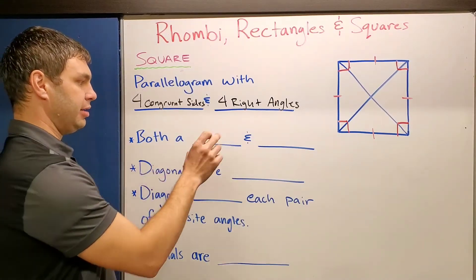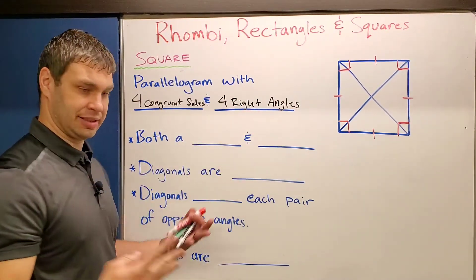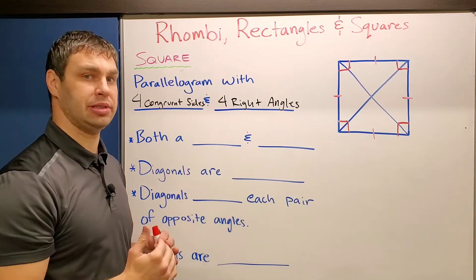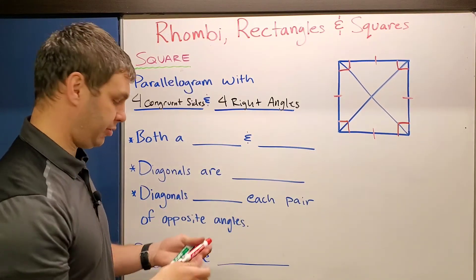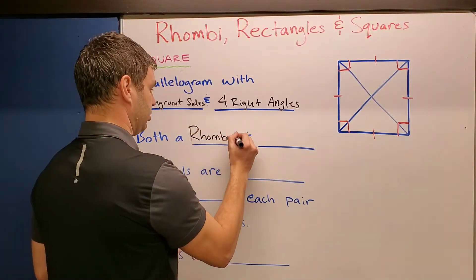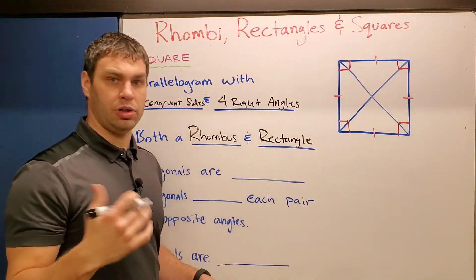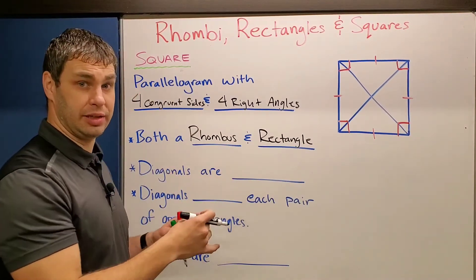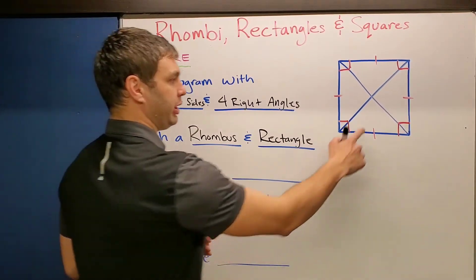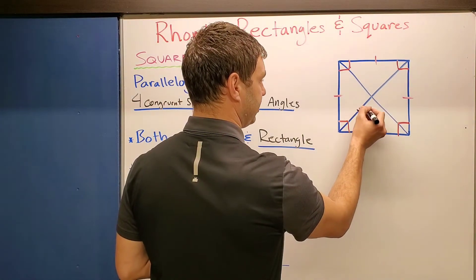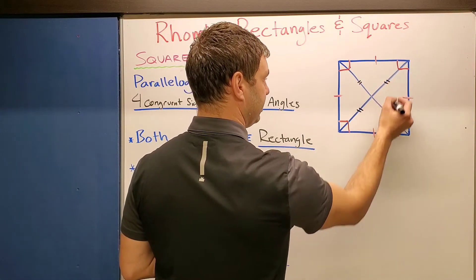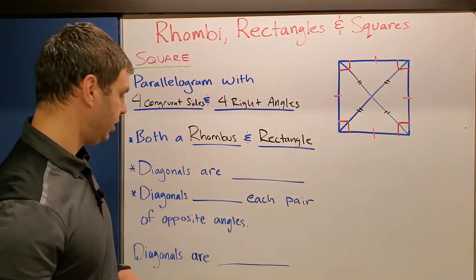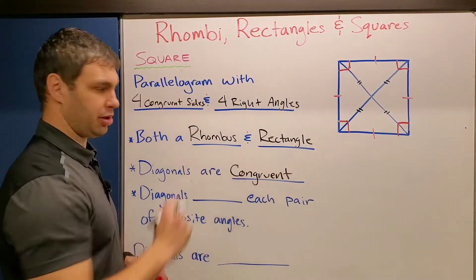Okay. What else does this have in common? So this is both a rhombus and a rectangle. It's kind of the overlap of both of those. So if you have a square, you can use all the properties of a rhombus and all the properties of a rectangle. One of those properties is that the diagonals are congruent. So again, kind of like we just did with the rectangle, we can mark this up by putting some more tick marks on each of these to show that those lengths are congruent to each other.